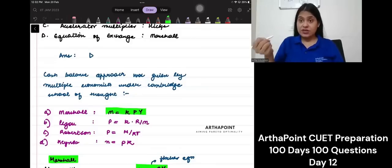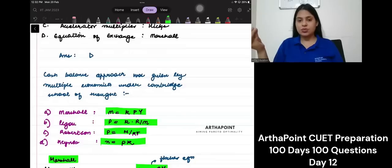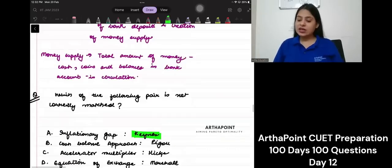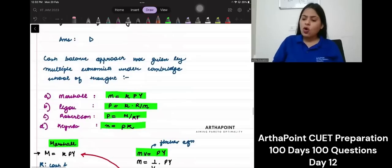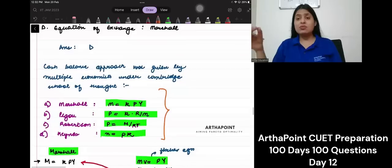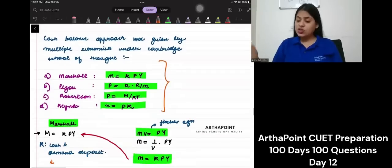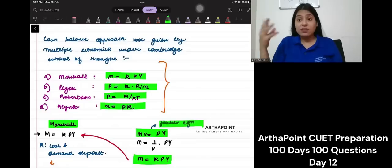Then Pigou gave his cash balance approach P is equal to K R by M. Robertson gave his cash balance approach and Keynes also gave his cash balance approach. So, it is correct if we say that Pigou gave the cash balance approach because all these Cambridge school economists actually derived it from the Fisher equation M V is equal to P Y.